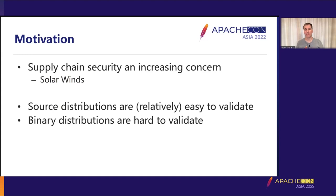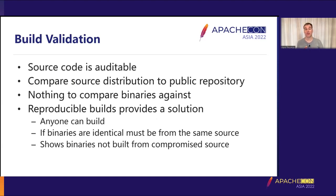In terms of supply chain security, what we're really looking at is: can I be sure that the software I'm downloading is the software I mean to download, and that it hasn't been tampered with? For an open source project, we look at that both in terms of source distribution and binary distribution. Source distributions are relatively easy to validate, whereas binary distributions are a lot harder. It is theoretically possible to audit the source code, and you can compare the source distribution to the public repository to be sure it's the genuine article.